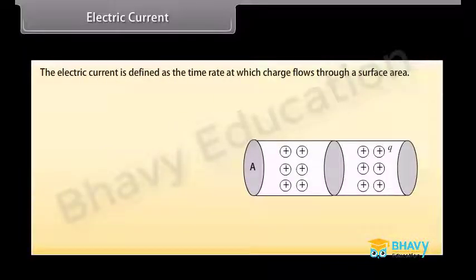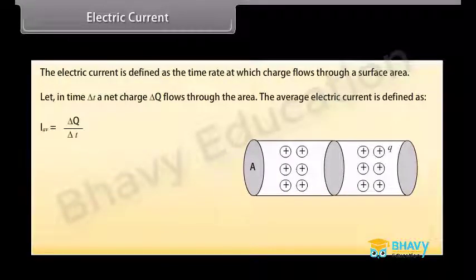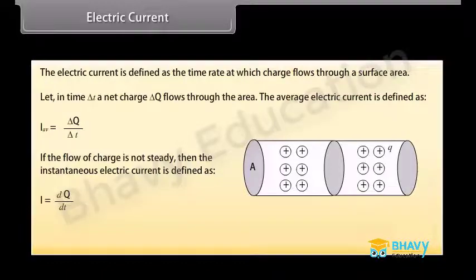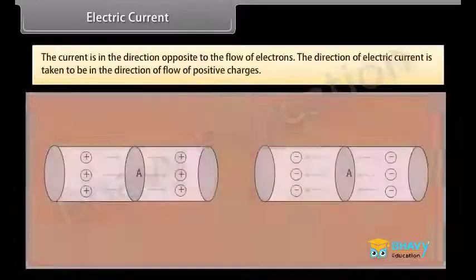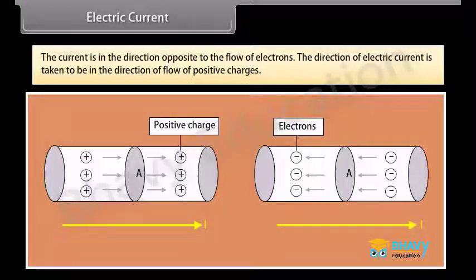Electric current: If the flow of charge is not steady, then the instantaneous electric current is given by dq upon dt. The SI unit of current is ampere. The current is in the direction opposite to the flow of electrons. The direction of electric current is taken to be in the direction of flow of positive charges.